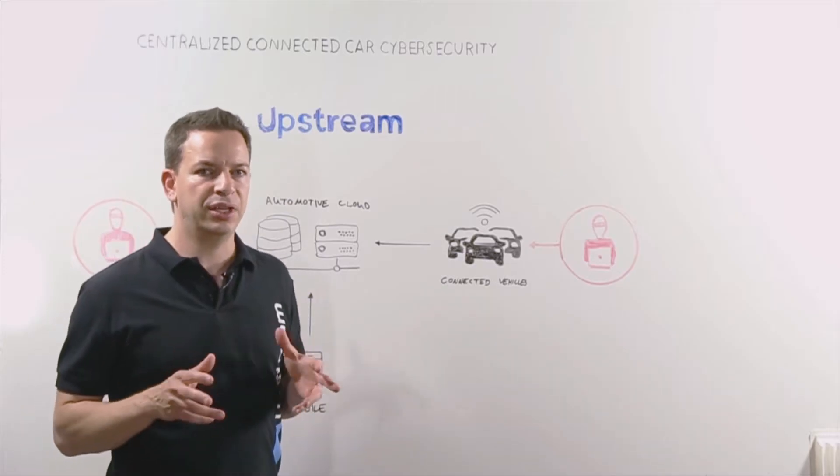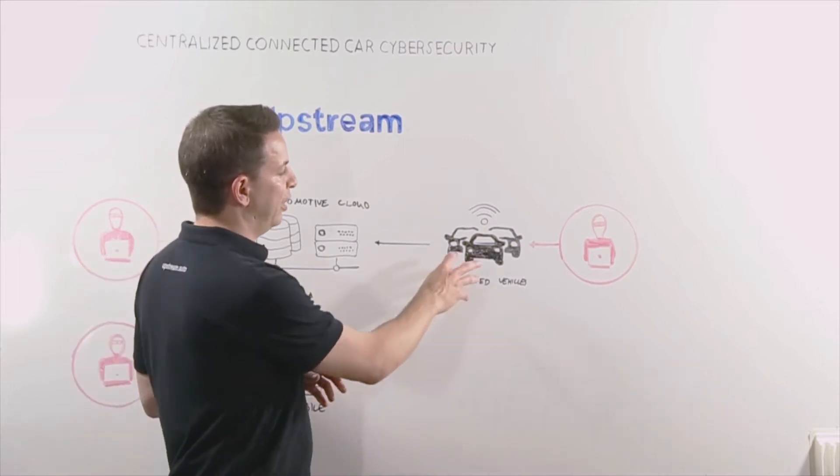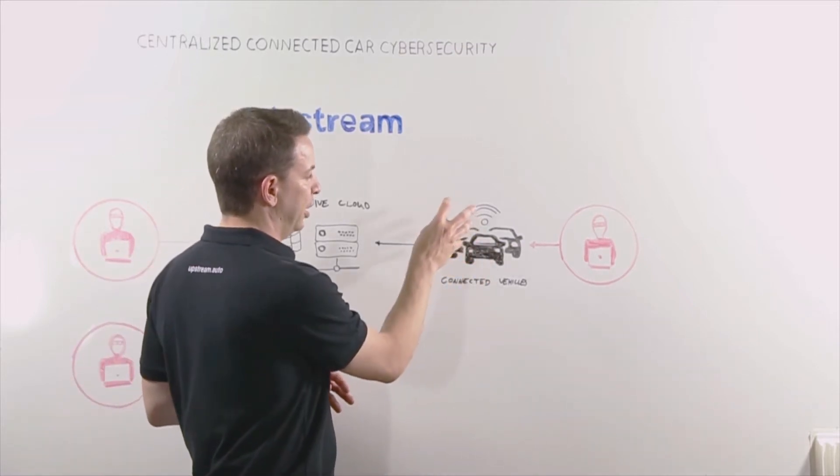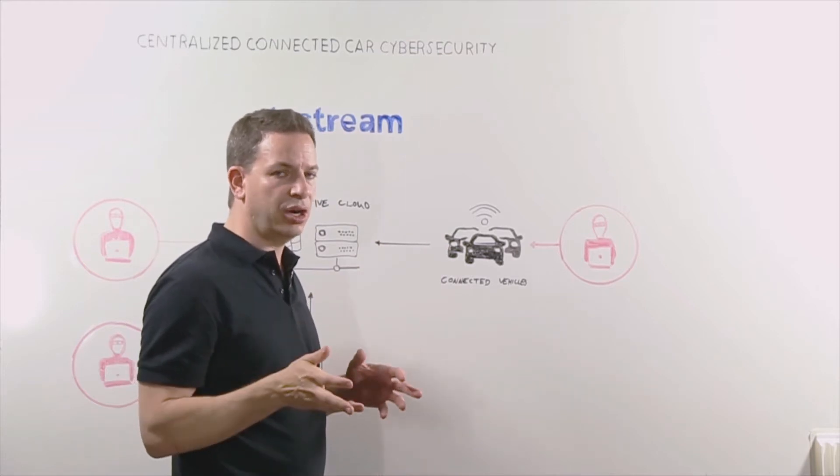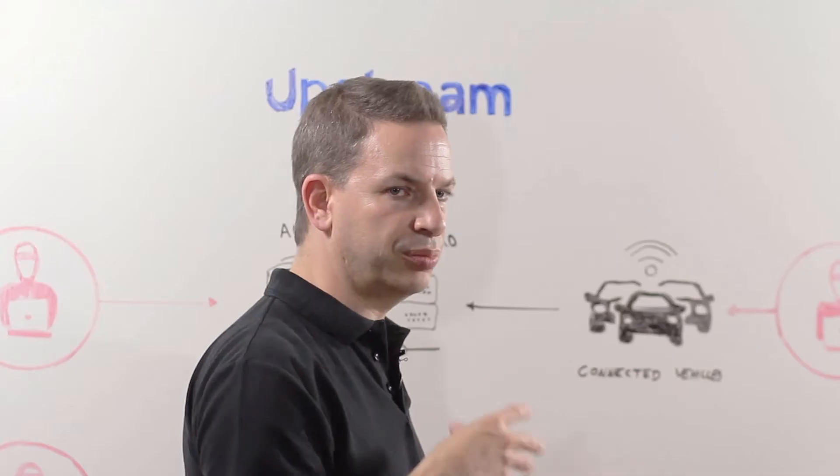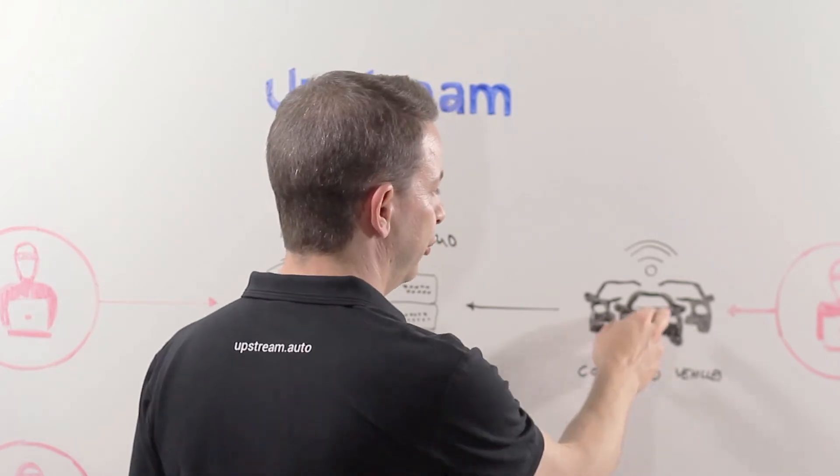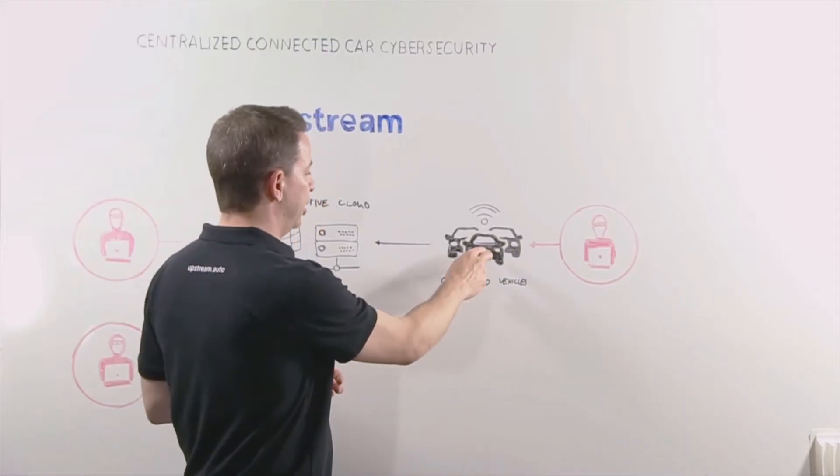Now let's look at how the connected car ecosystem looks. What we have here is a vehicle that has internet connectivity either through an embedded SIM card or through an aftermarket dongle that provides mobile connectivity. Through this data connection, the car connects to the automotive cloud.